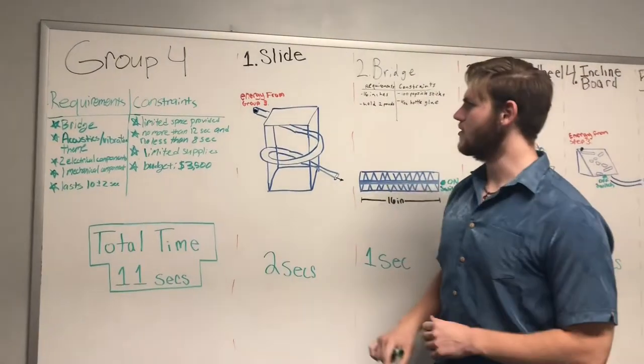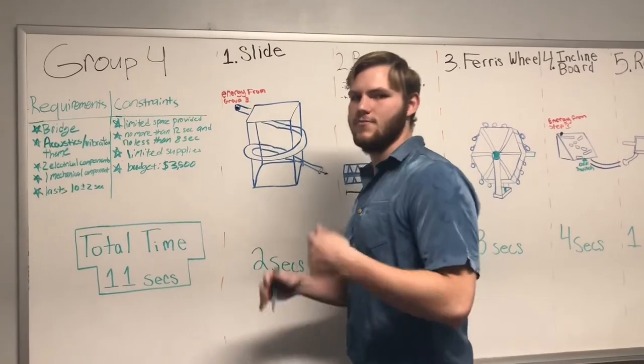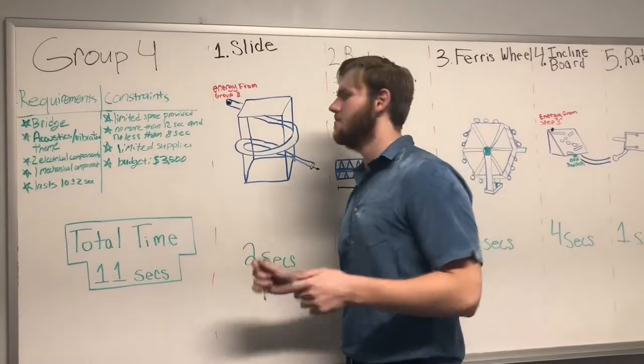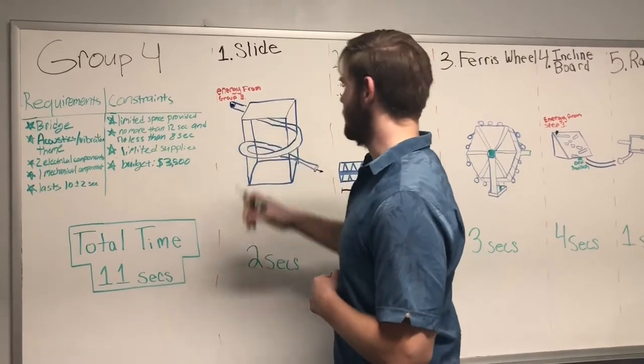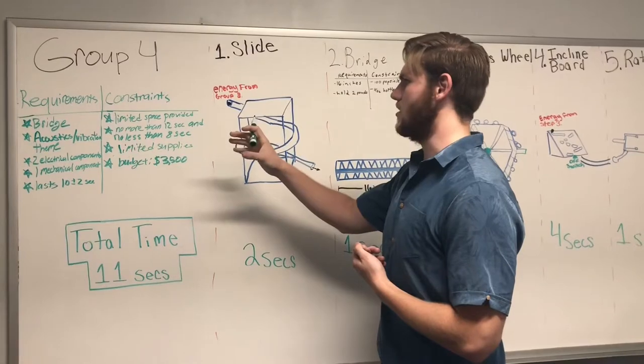All right, for a quick summary of our Rube Goldberg, we chose each and every component for a specific reason, because we thought it was the best way to get everything done efficiently and easily. For our first step, we did the marble slide, because it easily allowed us to get energy from Group 3.